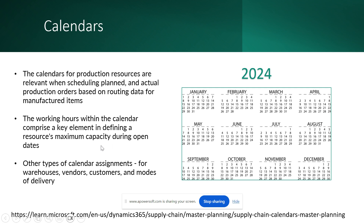An important point is that this calendar is a common setup and can be assigned for your warehouses, vendor scheduled receipts, and customer working times. For example, based on the working time of customers you can schedule material deliveries on sales orders. The same calendar setup is used across multiple forms in the system.